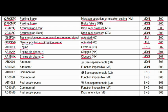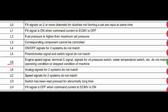Code AB00L6. Where is the problem? Alternator. What is the problem? See separate table L6. L6 means engine speed signal, terminal C signal, signal for oil pressure switch, water temperature switch, etc., do not match the operating condition or stopped condition of the machine.